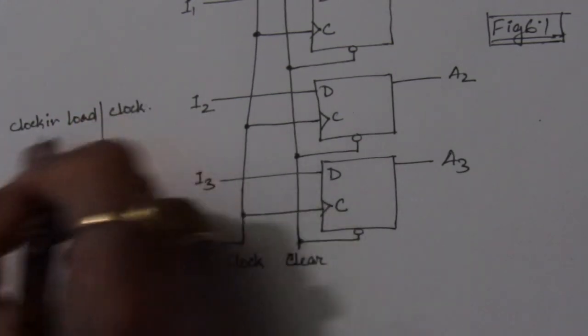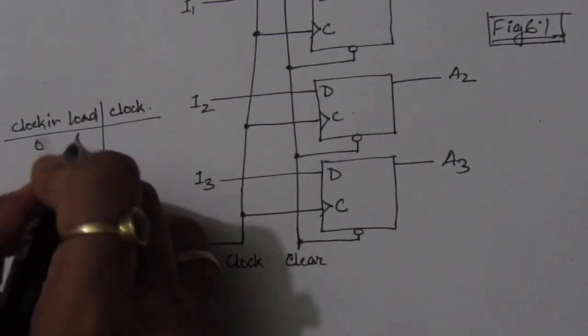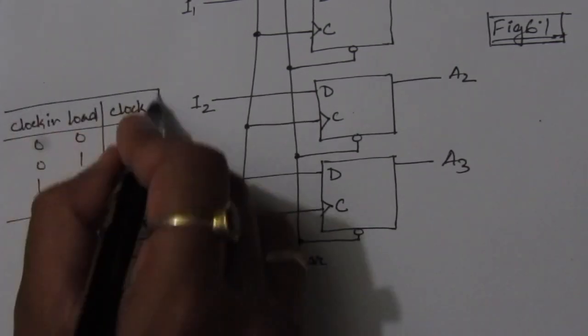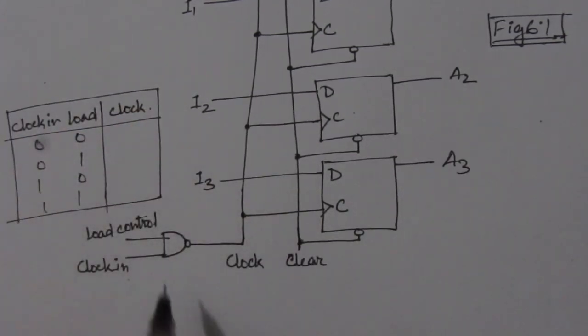The output will be this clock. So here we will have 4 combinations. Here I have drawn this NAND gate operation.